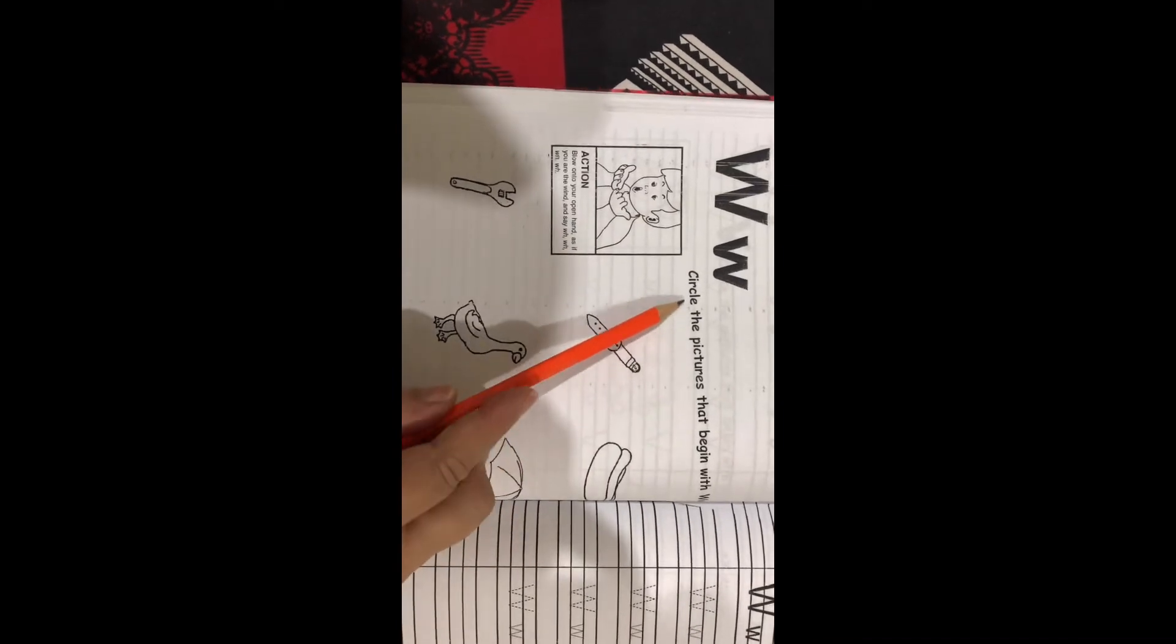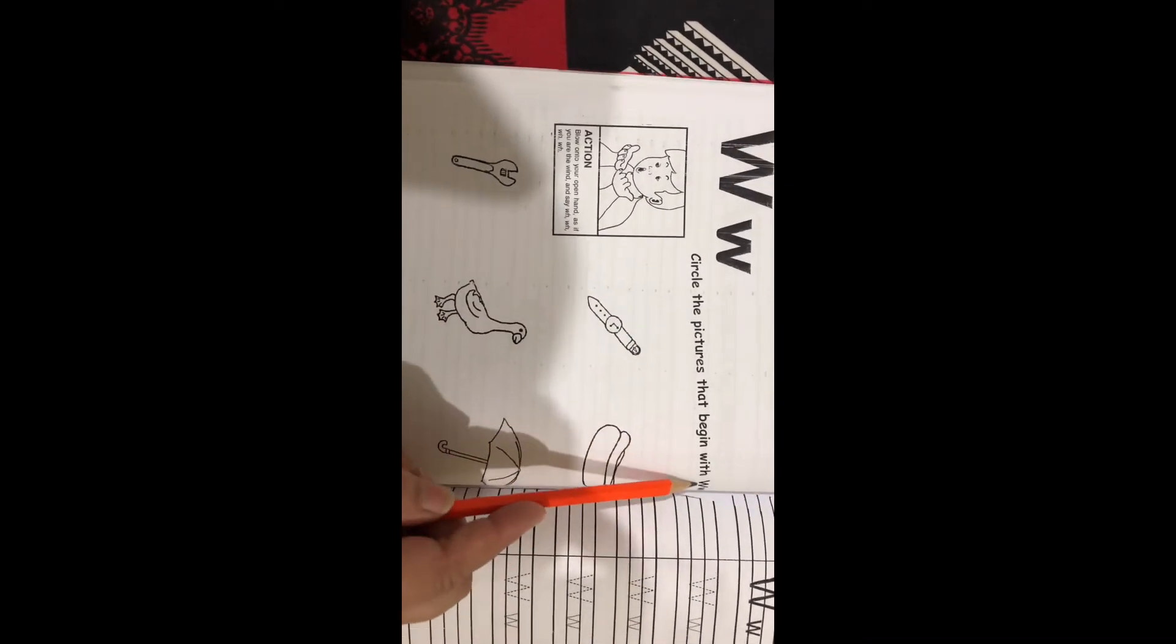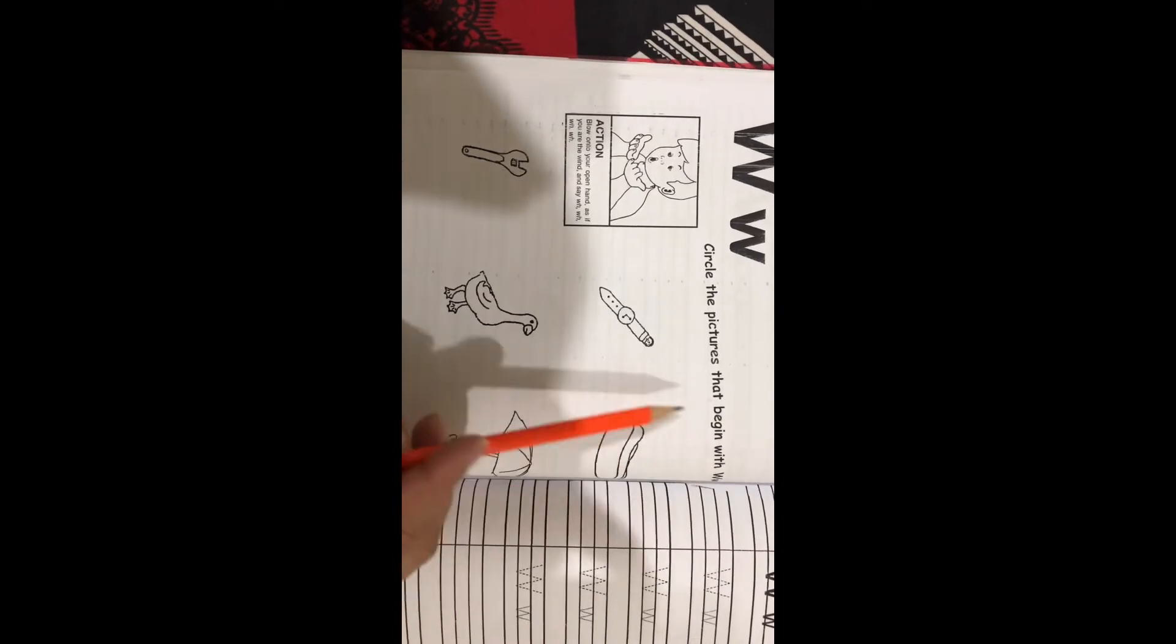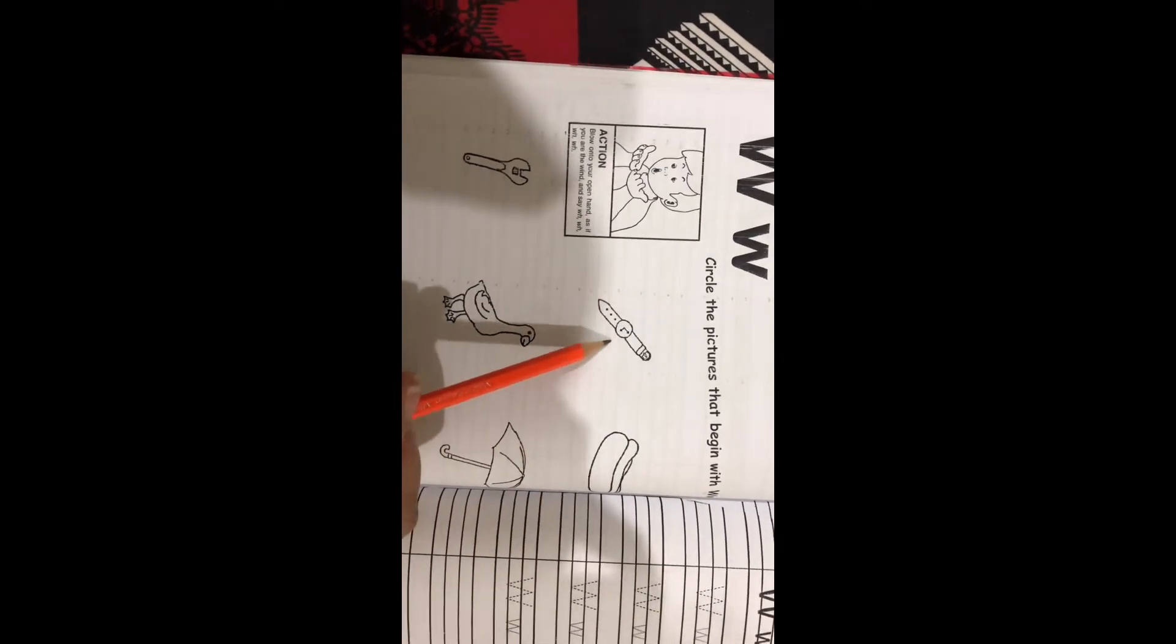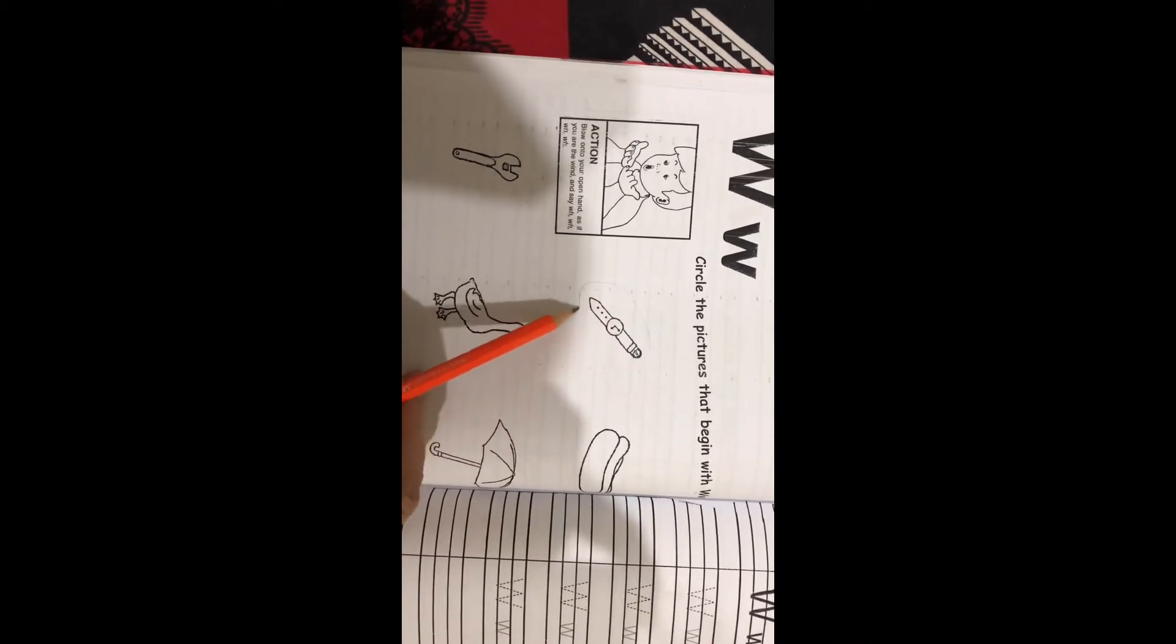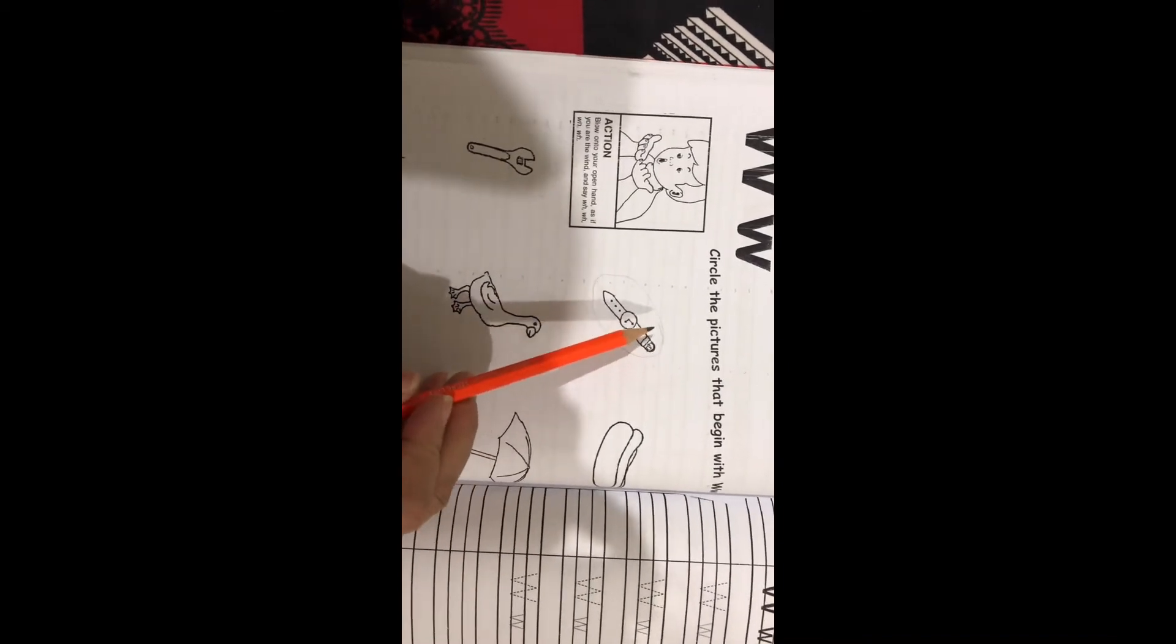Here you can see, circle the pictures that begin with W, W-A. What is this? Watch. Yes, watch. You will circle this and color this beautiful.